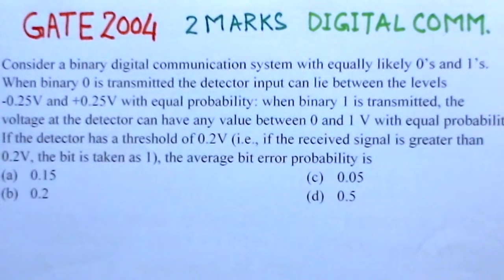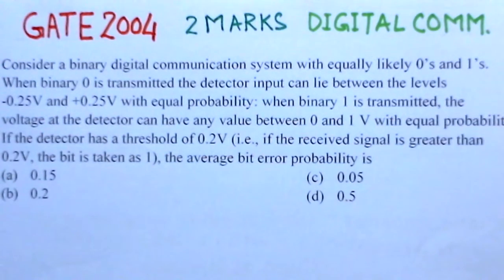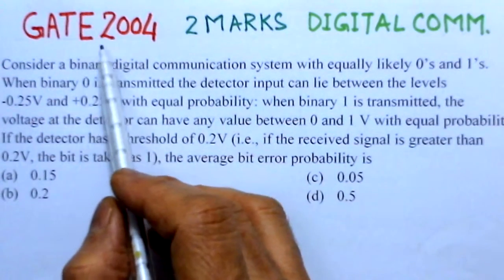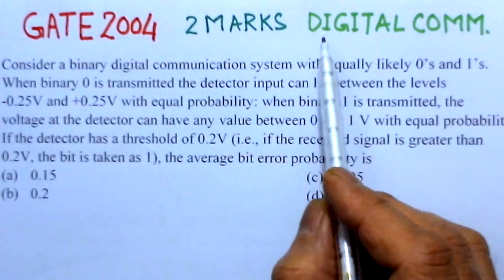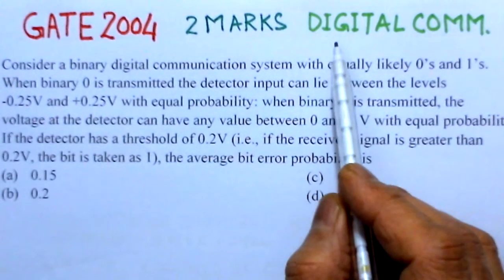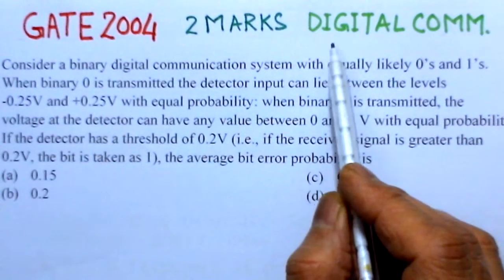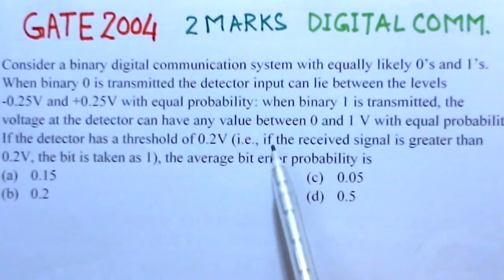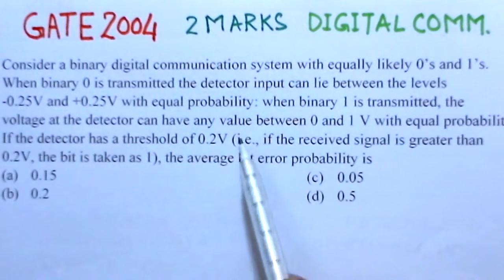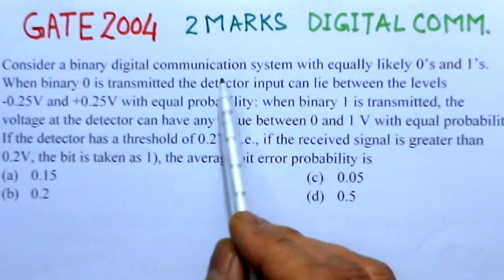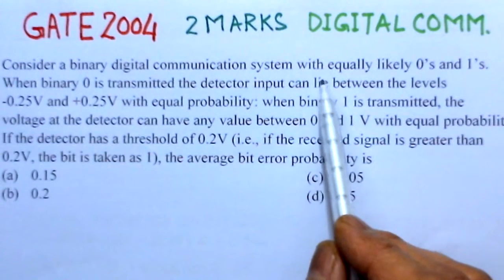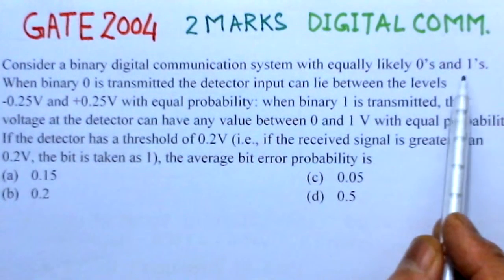The present problem is considered as of date 2004 and it is of two marks. The area of topic is digital communication. We'll read out this problem here: consider a binary digital communication system with equally likely zeros and ones.